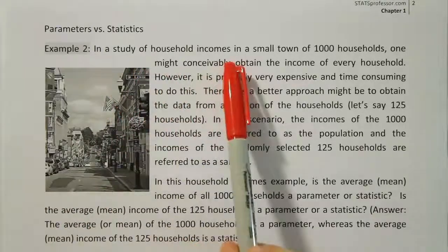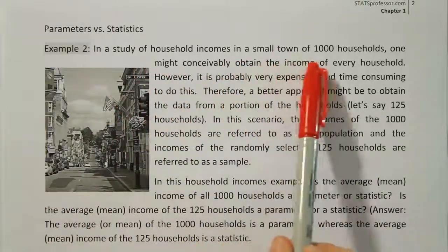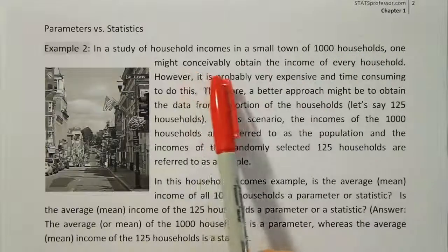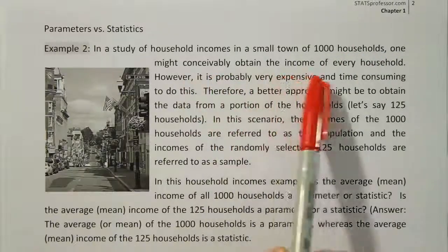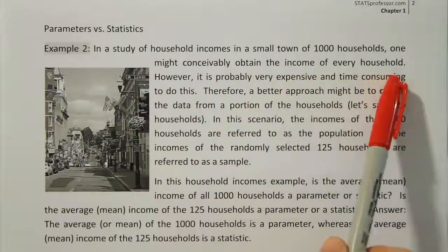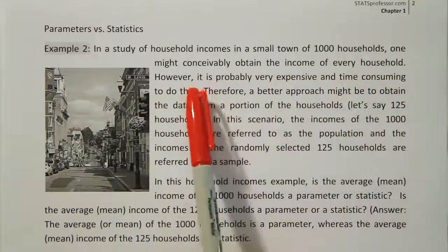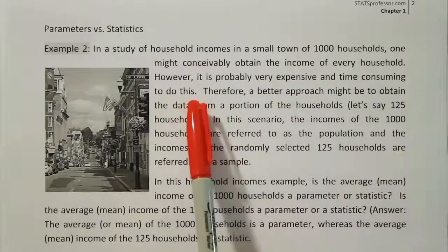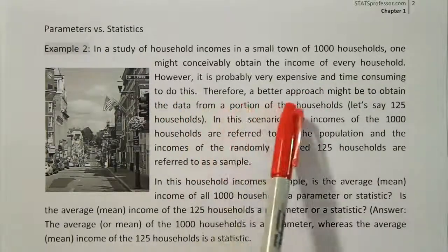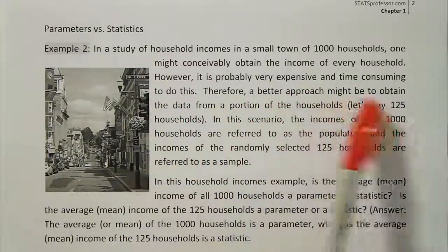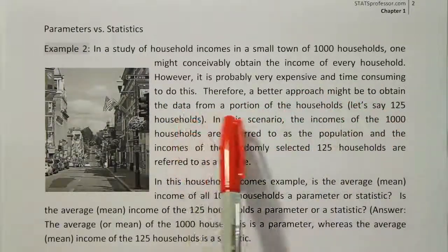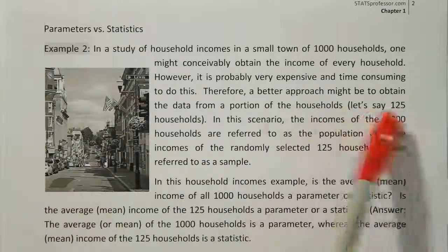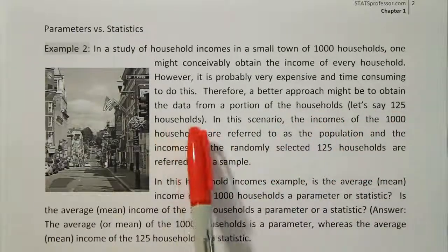In a study of household incomes in a small town of 1,000 households, one might conceivably obtain the income of every household. However, it is probably very expensive and time-consuming to do this. Therefore, a better approach might be to obtain the data from a portion of the households, let's say 125 households.